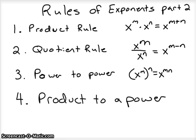This is rules of exponents part two. The first thing is the product rule: if you multiply variables with exponents, you add the exponents. Quotient rule — if you watch my part one video, you cross out ones. Power to power: if you have x to some power to another power, you multiply the two exponents. Those are the three major ones.